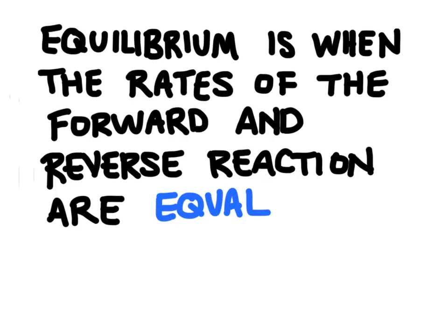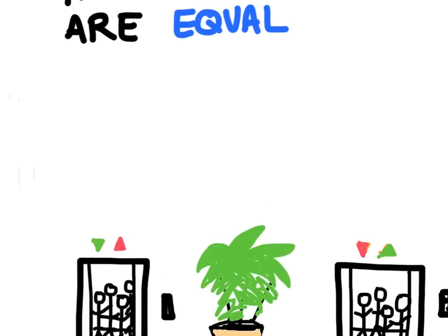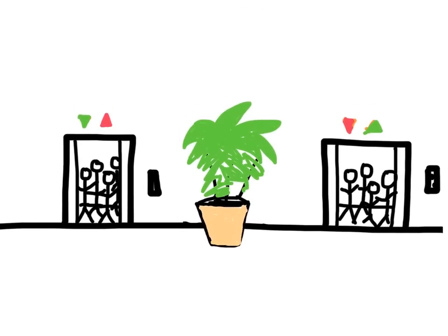Equilibrium is when the rates of the forward and reverse reactions are equal. We can think of it this way: imagine an office building with two floors and two elevators. As people come in in the morning, everyone starts on the first floor. Since everyone is on the first floor the building is not at equilibrium, so people will start going up to the second floor and we'll start approaching equilibrium — a balance between the two floors.